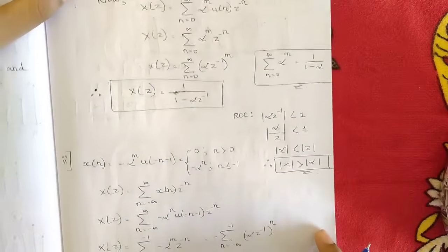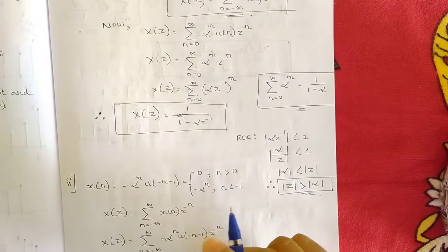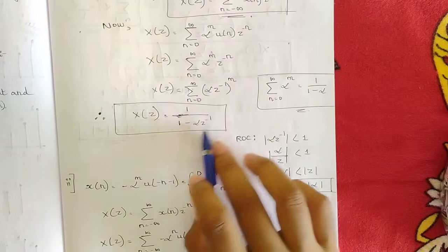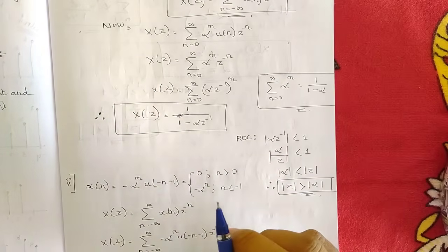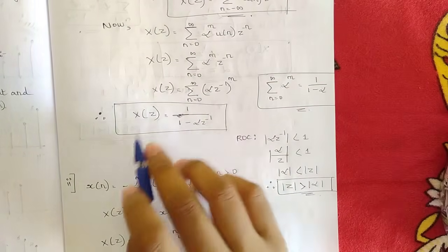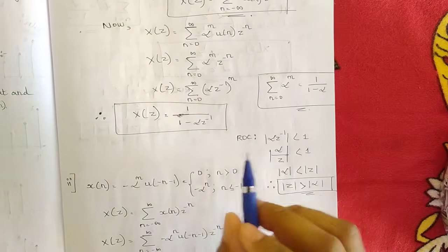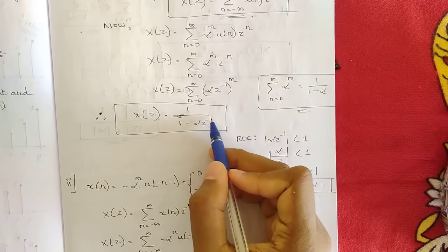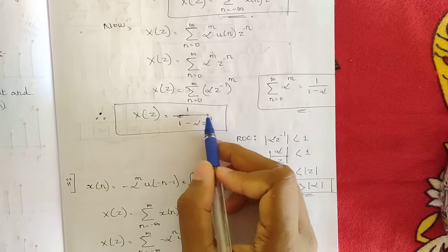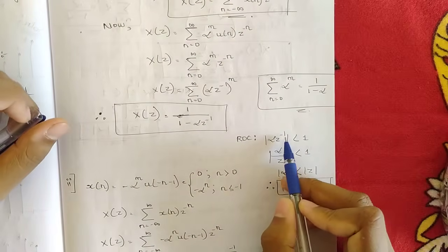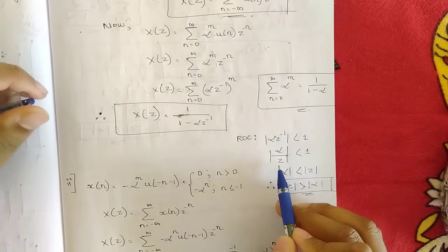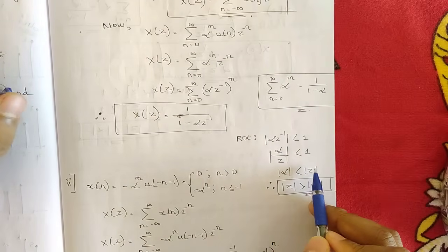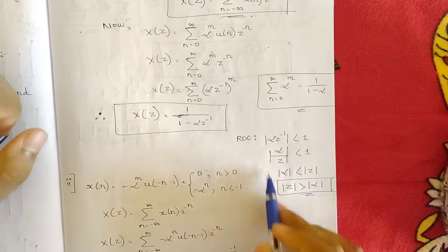We must also specify the Region of Convergence (ROC). X(z) must not tend to infinity, so the condition is that |α·z^(−1)| < 1, i.e., |α/z| < 1, which means |z| > |α|. So the ROC for this sub-question is z strictly greater than alpha.